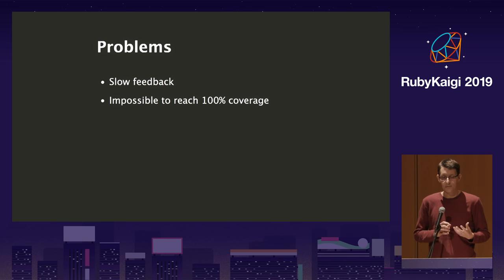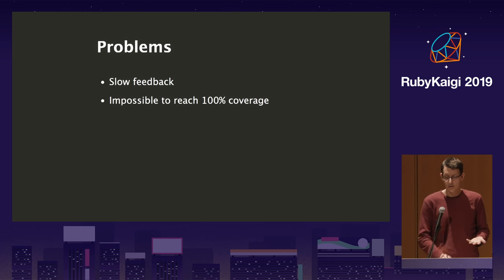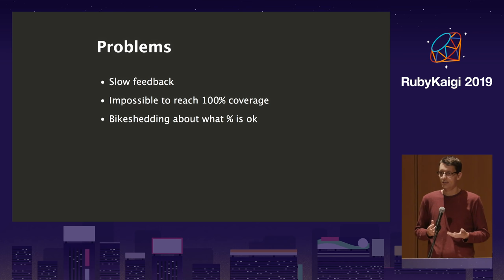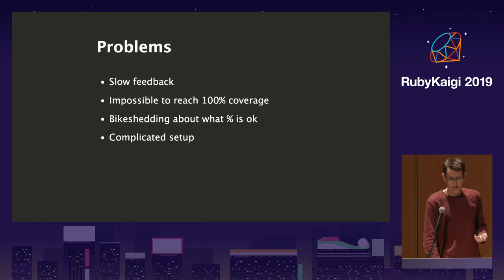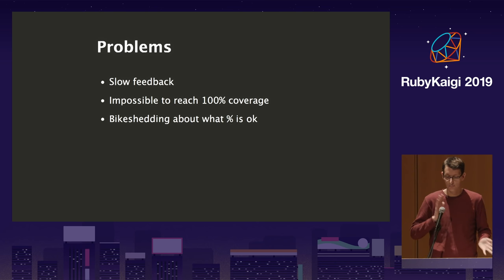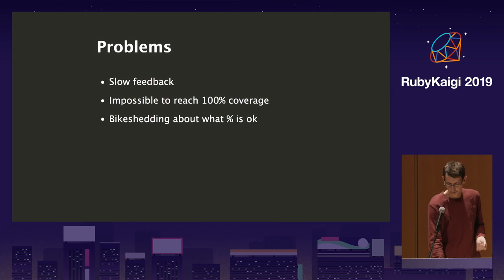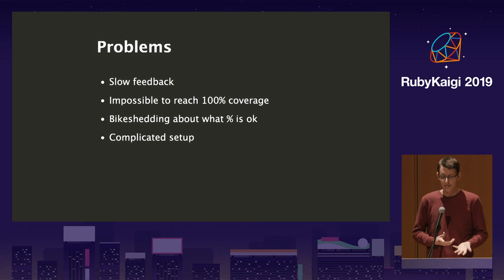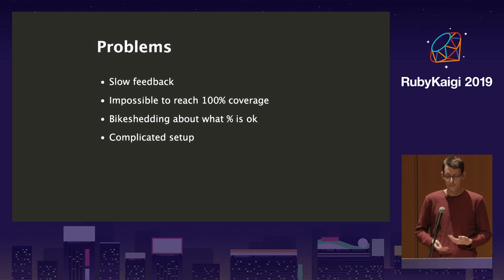You also end up in a state where you can never reach 100% coverage because you always have setup code or edge cases without coverage. You end up bike-shedding — 80% is fine, 90% is fine. If you want 100% with documented exceptions, you need to explicitly say 'this line is not covered because it's not reachable or not security critical.' The setup is also very complicated: you have to install webhooks, pay providers, get accounts for everyone, and sometimes get errors you can't reproduce locally.